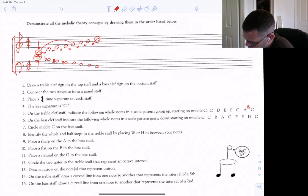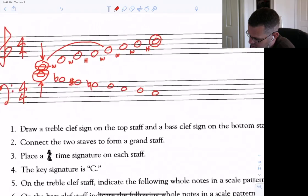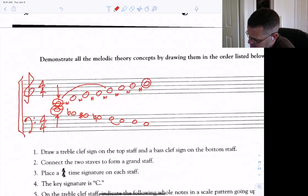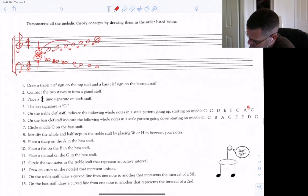And on the bass staff, draw a curved line from one note to another that represents the interval of a second. Oh, really? We can pick just about any of them. I'll pick F to E.